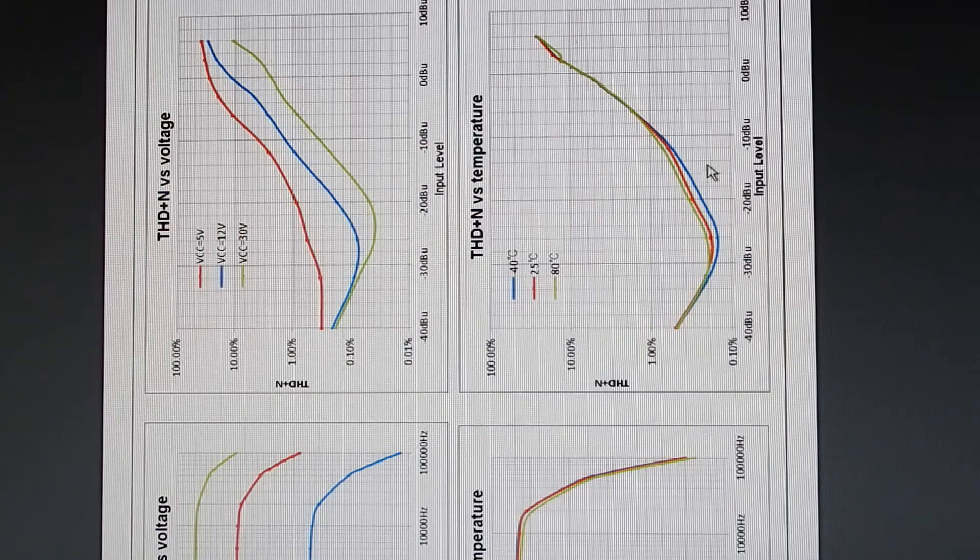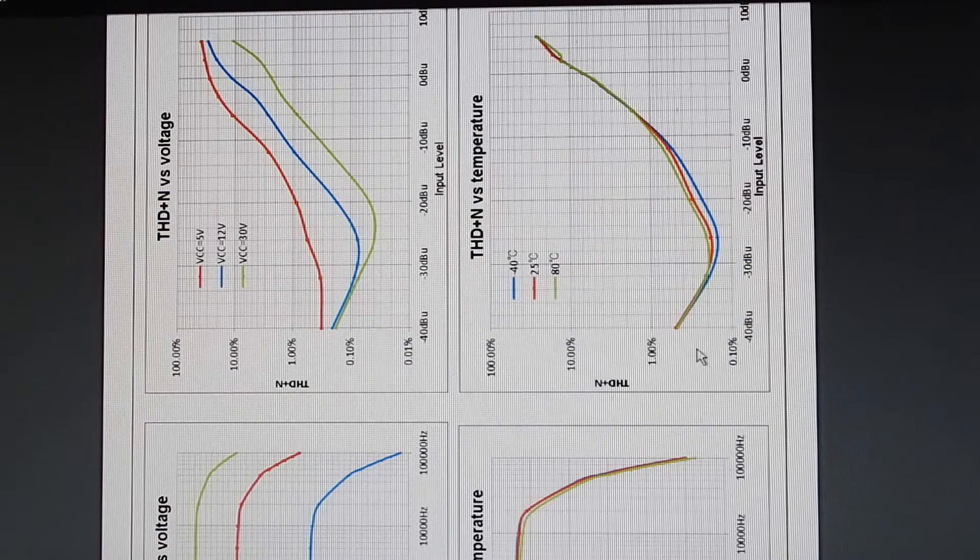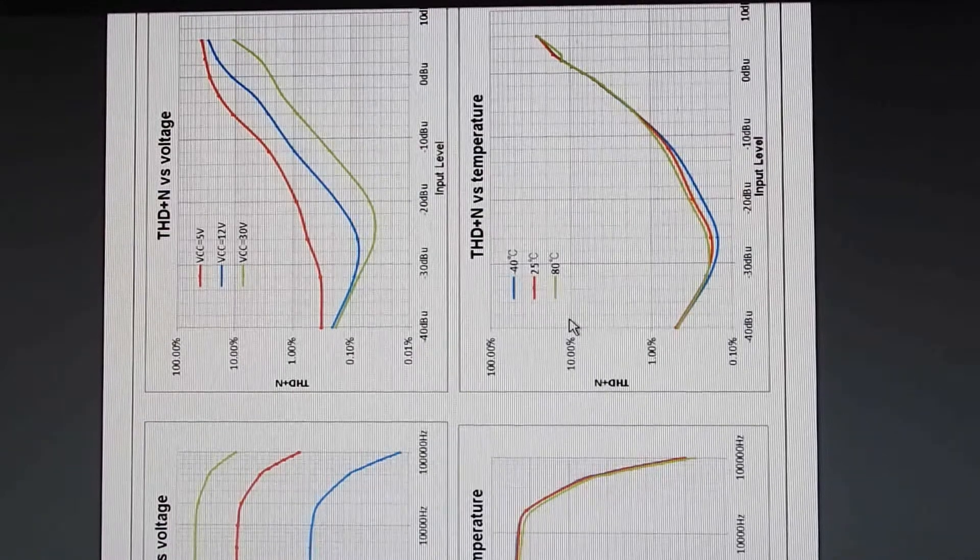If you listen to a violin on an amplifier that has this much distortion, it's going to sound different. Complex sounds like a violin are really good to do comparisons with.